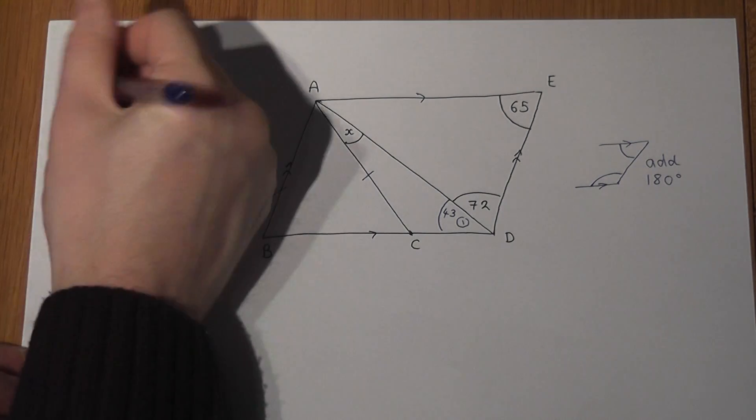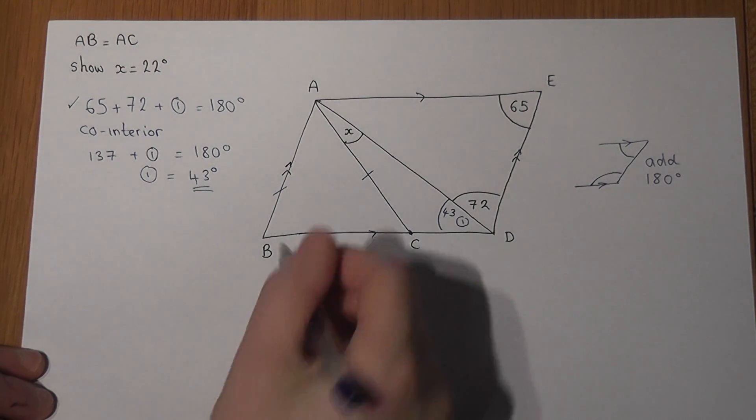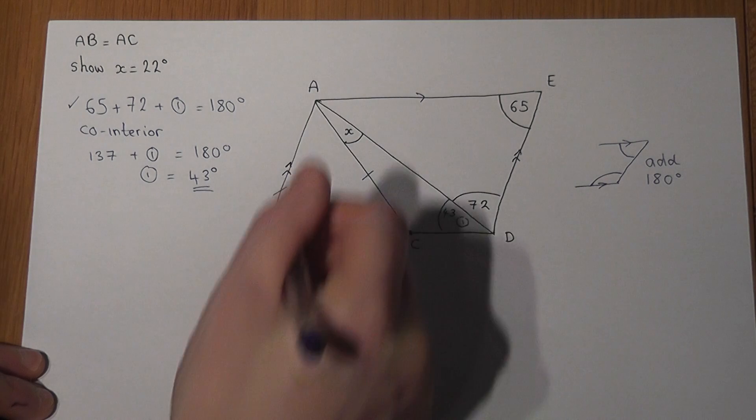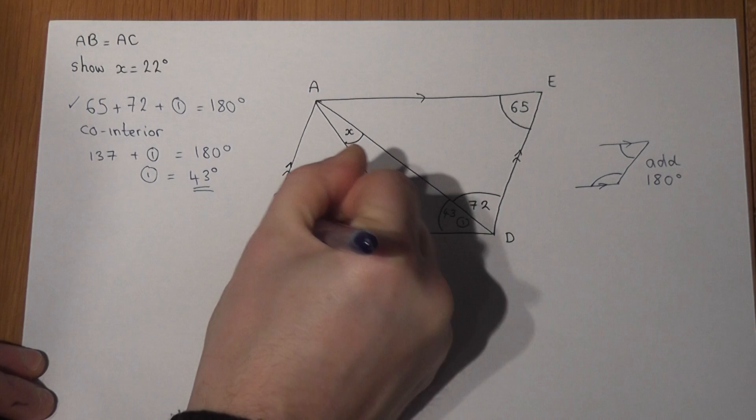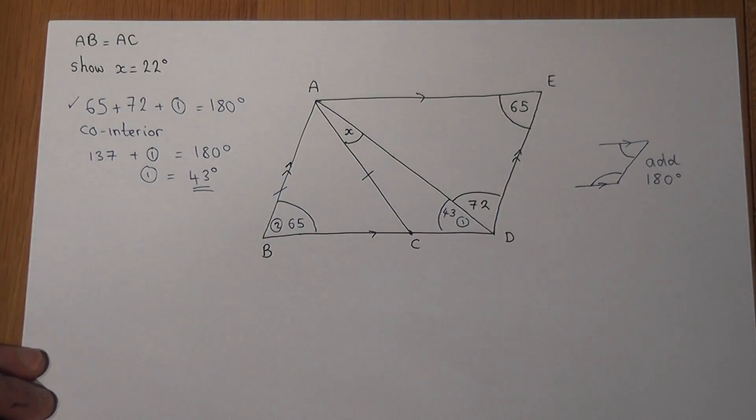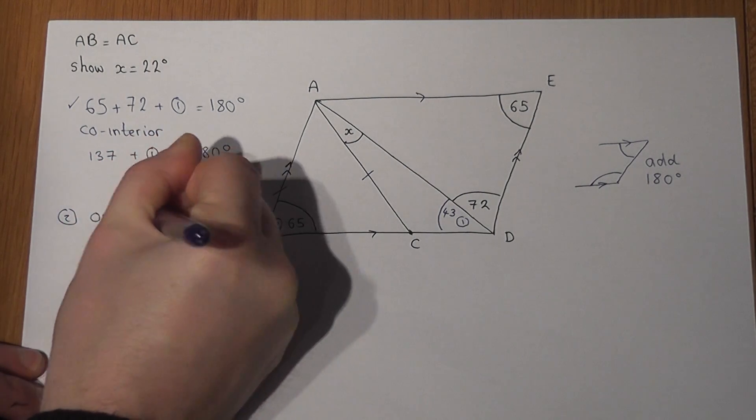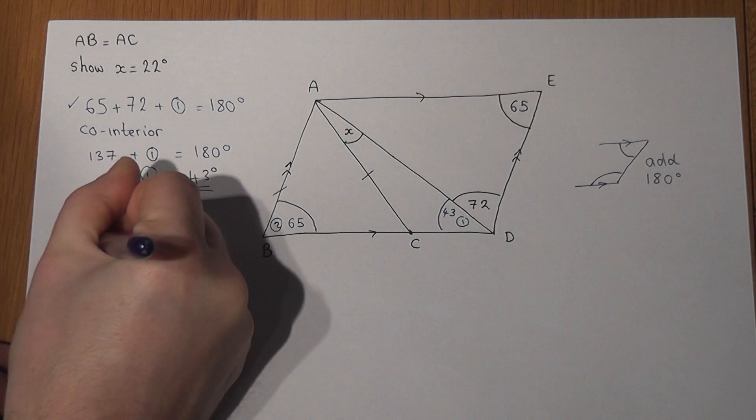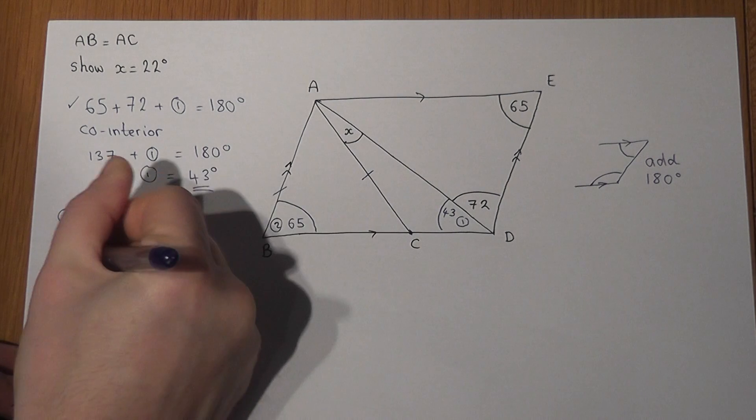Now that's step one. Step two is involving opposite angles of a parallelogram. These two angles here are always the same, so I could put a two here, write in 65 degrees, and I could write down the two opposite angles in a parallelogram are equal.